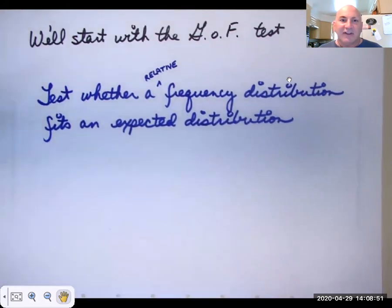The goodness of fit test is going to test whether a relative frequency distribution fits an expected distribution. Now think about what a relative frequency distribution is. It's percentages, fractions, or proportions of a whole. You can go back to what was probably chapter one or chapter two of our current textbook to learn about relative frequencies.